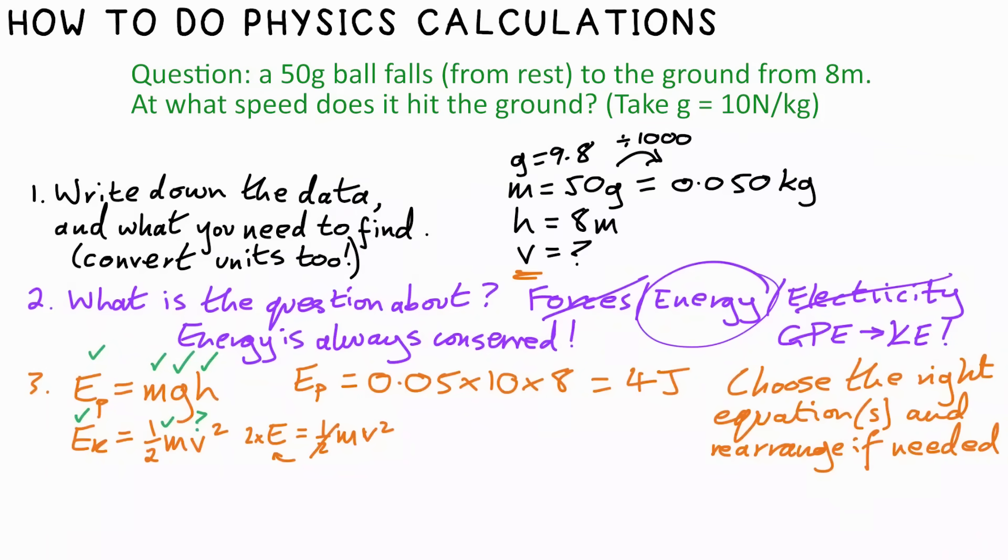And then we need to get rid of the M to the other side as well. I'm just going to say two E, two times the energy is equal to M V squared. So get rid of the times M, we divide by it on the other side. We do the opposite. We're not quite done because we just want V, we don't want V squared. So to undo this, we square root the whole thing. Now you can write down the equation.